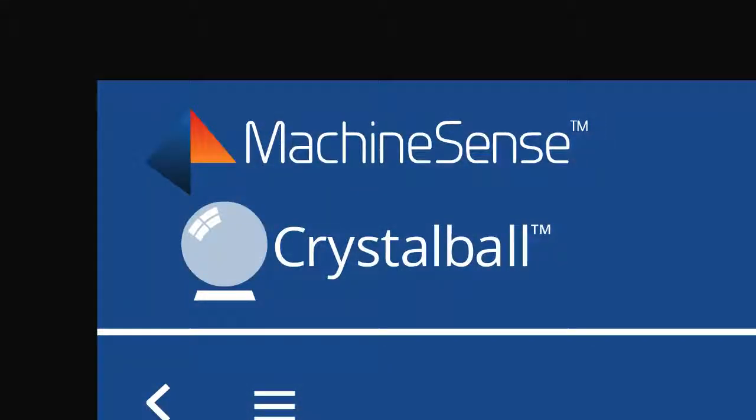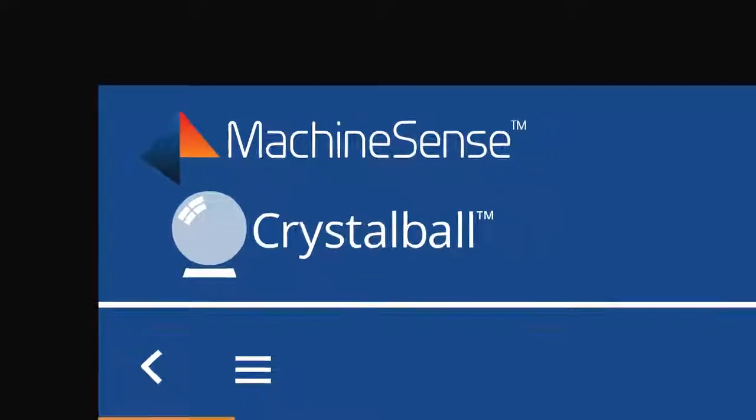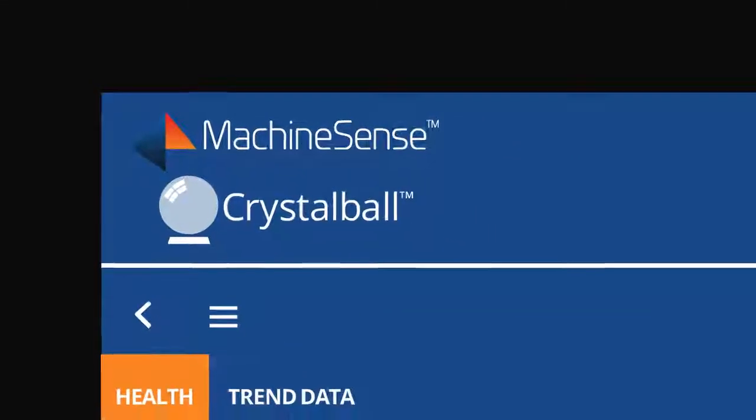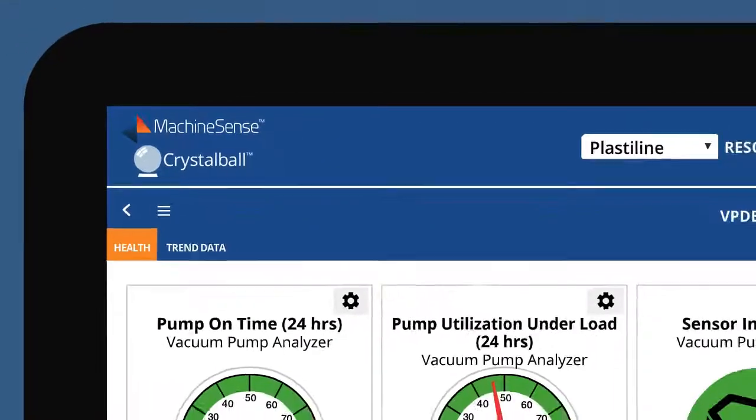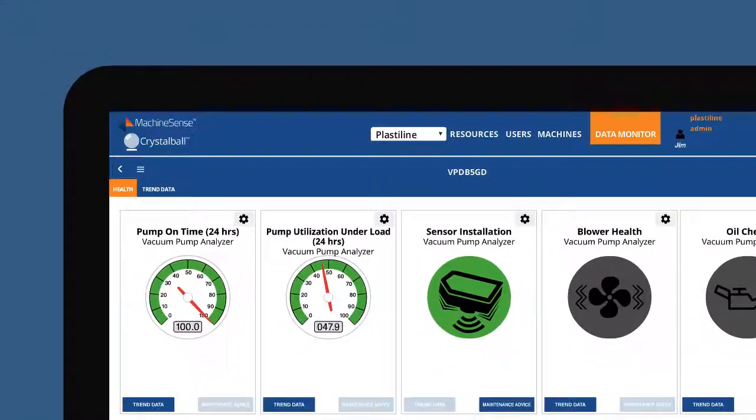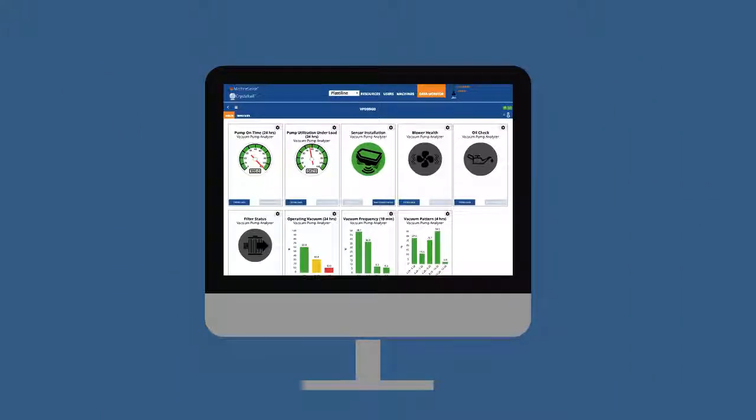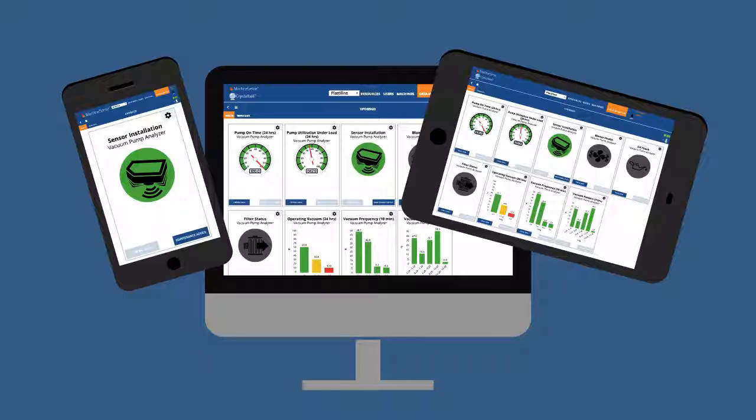Our easy-to-use Crystal Ball condition monitoring software is accessible through a web browser and an easy-to-navigate mobile app, allowing you to view real-time machine condition 24-7, 365, from any desktop computer, laptop, tablet, or phone with an internet connection.